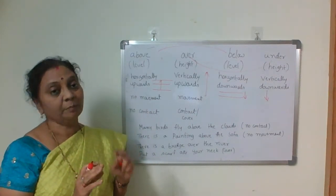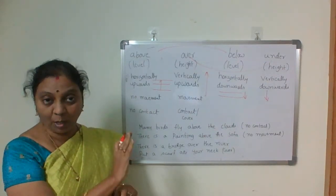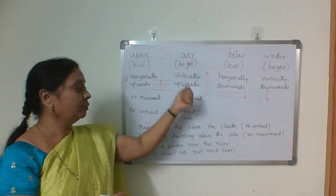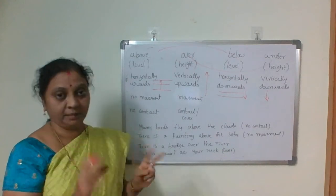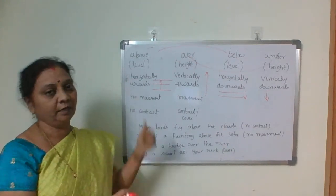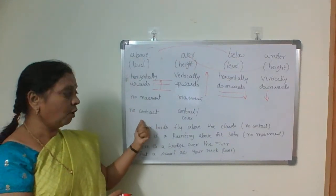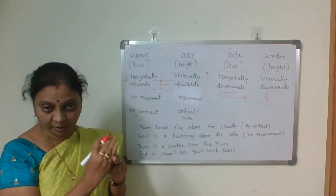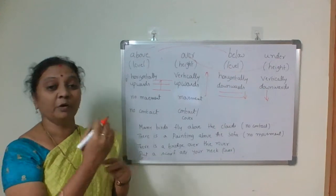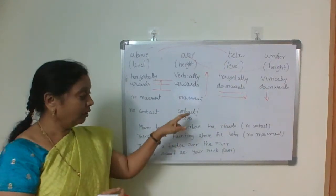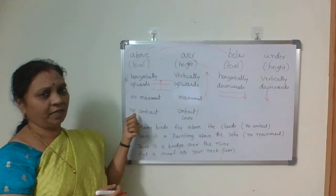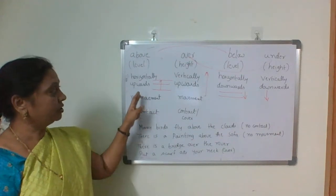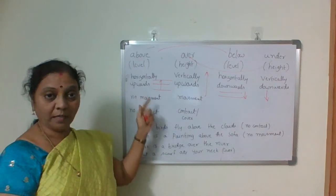In the case of 'above', there is no movement. Whenever you use 'above', there is no movement. Whereas in 'over', movement is there — that is the major difference. Also, in 'above' there is no contact and no cover between the two objects. In 'over', contact is there — one object is covered by another. That is the major difference between 'above' and 'over'.